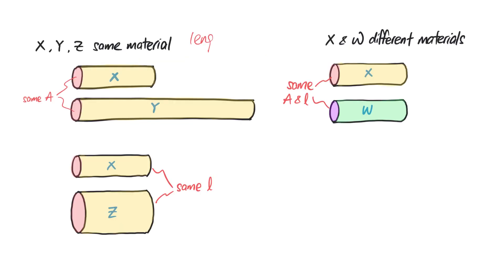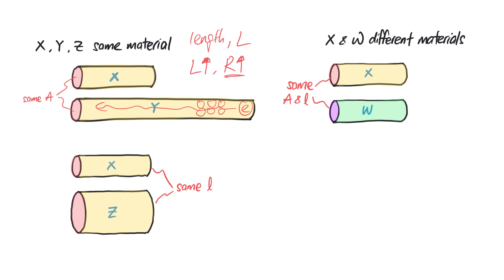Let's start with the length L. In general, the longer the length of the conductor, the higher the resistance. You can imagine that electrons going through a longer conductor have to collide with more particles, hindering their movement, so the resistance will be higher. Another analogy: it's like running a marathon — you'll be tired — so the resistance to run will be higher.